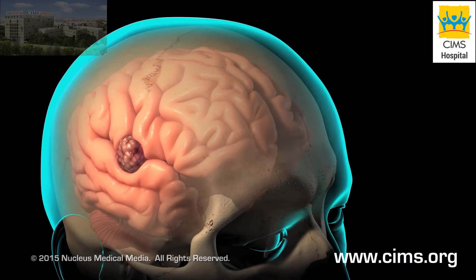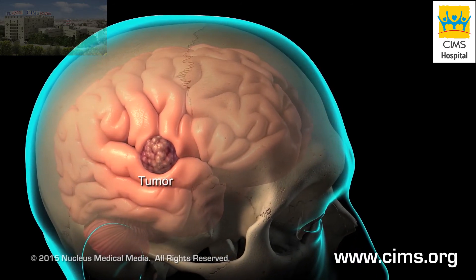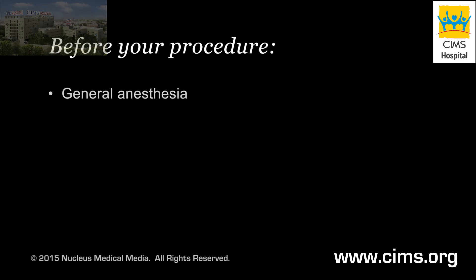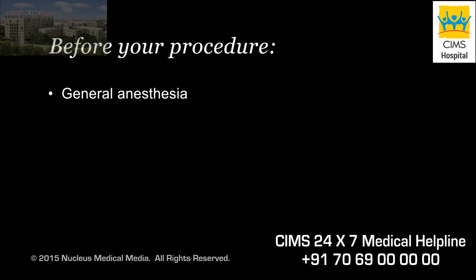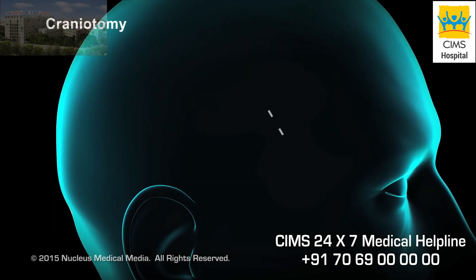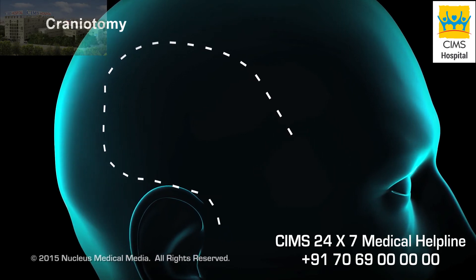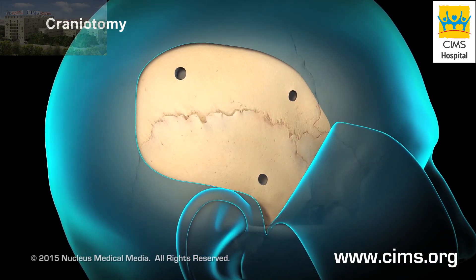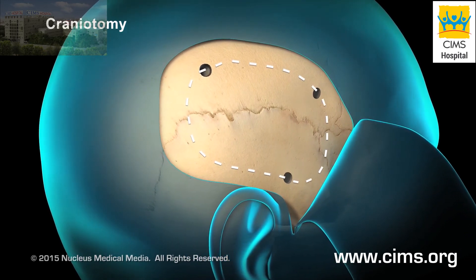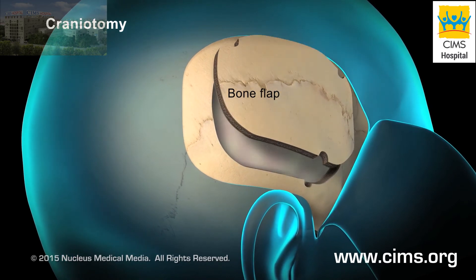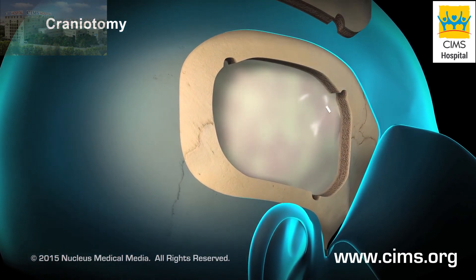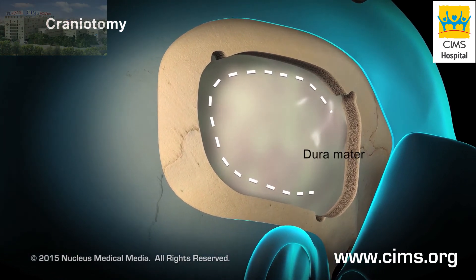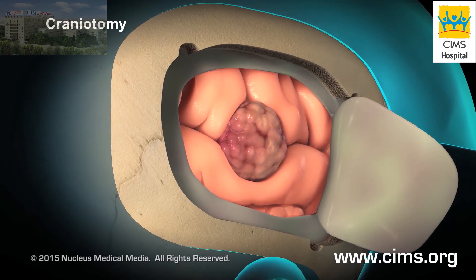The most common reason for a craniotomy is to remove a brain tumor. Before your procedure, you will be given general anesthesia to make you unconscious and pain-free. The skin on your scalp will be shaved over the location of the tumor. Your surgeon will make an incision in your scalp. One or more small holes will be made in your skull. Then your surgeon will connect the holes to create a circular piece of bone called a bone flap and remove it. Your surgeon will make an incision in the dura mater to expose your brain, and then your tumor will be removed.